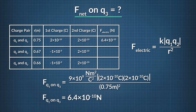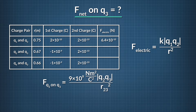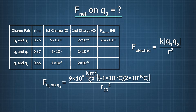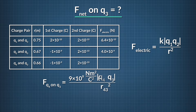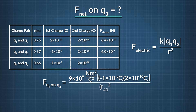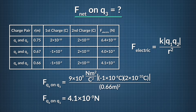We fill that in on the table and move on to q2 and q3. Plugging these values into Coulomb's Law, we find that the electric force between q2 and q3 is 4.0 times 10 to the negative ninth newtons. Now for the last pair, q4 and q3: Coulomb's Law tells us that the force between q4 and q3 is 4.1 times 10 to the negative ninth newtons.